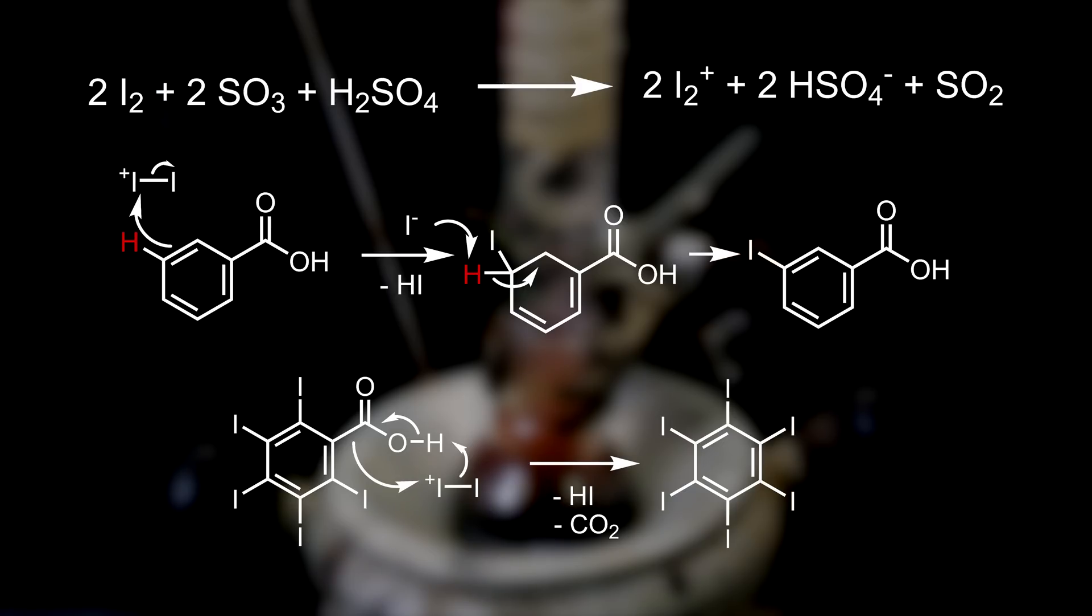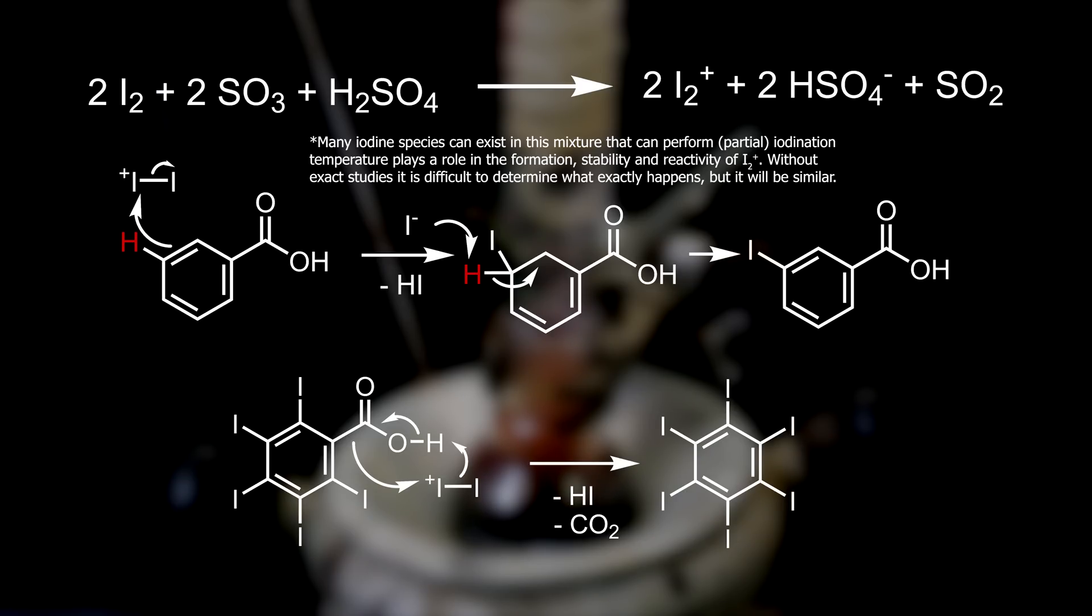If we assume this reaction mechanism, we would actually need twice as much iodine to convert everything into hexaiodobenzene. However, many iodine species can exist in this mixture, and some iodinations, especially initial mono or diiodonations, might follow a different mechanism with a different iodine species that is more atom economic.